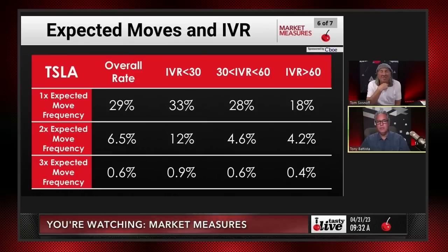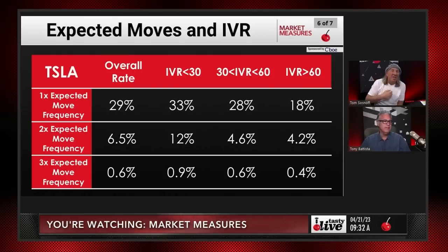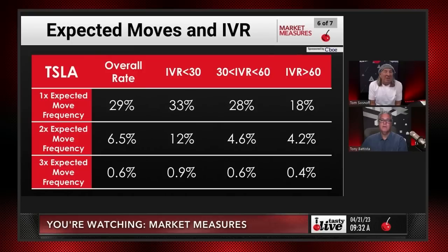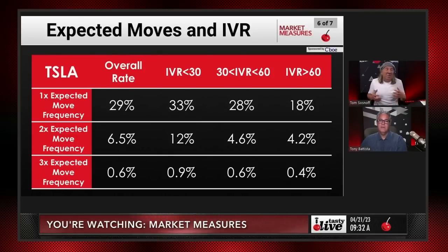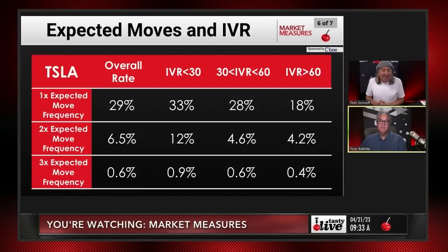In Tesla, the ranges are mostly in line, but the two-times expected move is well outside of theoretical. The outlier risk in Tesla at three times is pretty low. The overall takeaway is that indexes have elevated three-times expected move risk, while equities like Apple and Tesla have elevated one- and two-times expected move risk — that's really the key distinction.